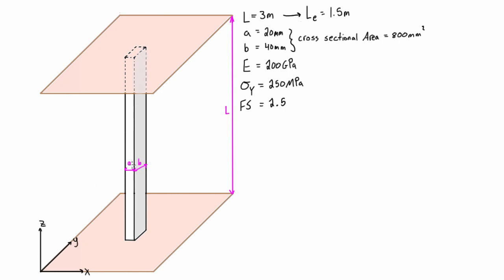It can buckle in the YZ plane, basically going out that way or coming this way. And it can buckle in the XZ plane, so basically kind of going into the page like that or out of the page. So we need to check what the critical load is for each possible direction it can buckle in. Then from there, we can use the factor of safety to determine the allowable load. And then after, we'll also check to see if it's yielding before it's buckling.